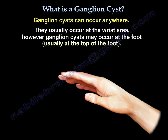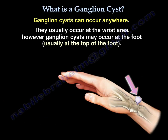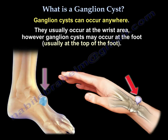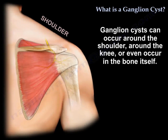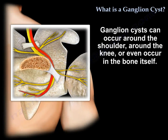Ganglion cysts can occur anywhere. They usually occur at the wrist area. However, a ganglion cyst may occur at the foot, usually at the top of the foot. It can also occur around the shoulder and around the knee, and it can even occur inside the bone itself.